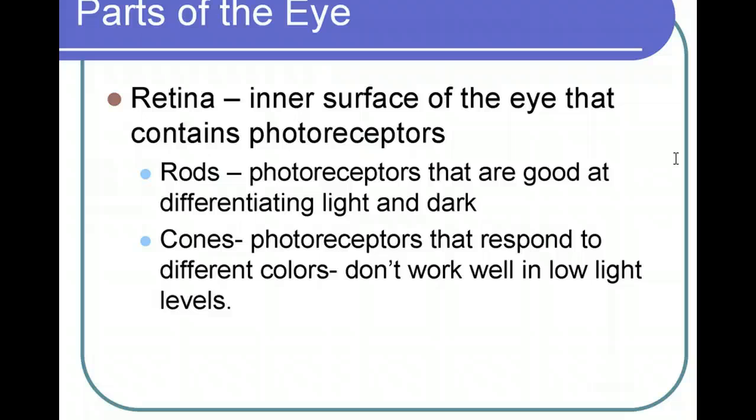Rods are photoreceptors that are good at differentiating between light and dark. These are the type of cells that you use when you're in a darkened room. You may have noticed that at night you can't see color very well — like if you get up in the middle of the night and notice a shirt on the floor, it can be really hard to figure out what color that shirt is. This is not because the shirt has a different color at night; the color of the shirt never changes. But in low light situations, you use your rods, which is good for seeing in low light but makes it very hard to see color.